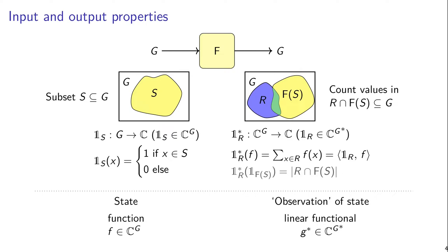The way we represented it above was using a linear functional. The important part here is that this is actually going to be always a linear function — that's a requirement that we impose. So this is an element of C superscript G star, which is the space of linear functionals, or the dual. And there is actually a way of simplifying this, because for any G star we can find a G such that G star of F is the same as taking the inner product of G with F. So we can identify G star and G by choosing an inner product. This basically means that both input properties and output properties can be represented by functions from G to the complex numbers.